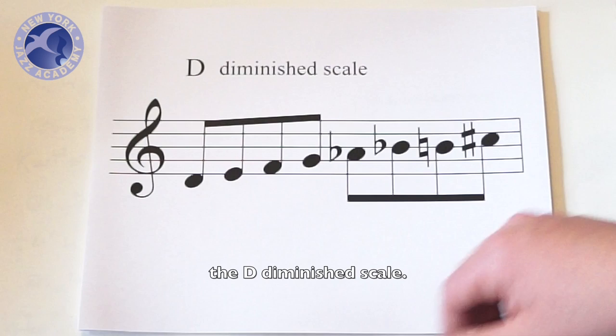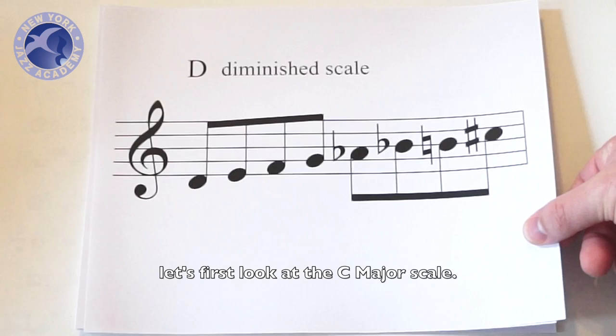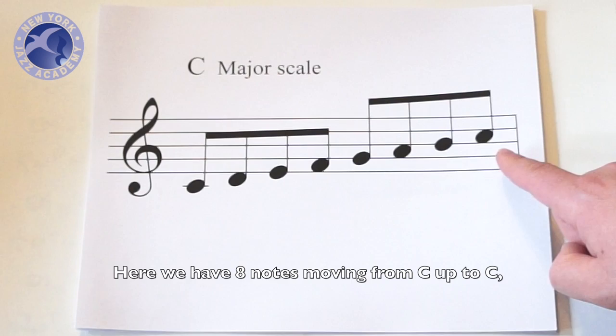So here are eight notes that form the D diminished scale. Before we take a closer look at these eight notes, let's first look at the C major scale. Here we have eight notes moving from C up to C, no sharps, no flats.